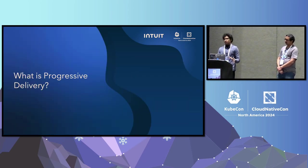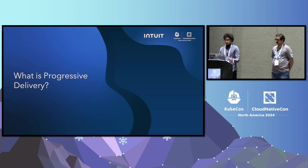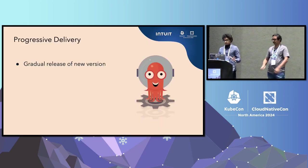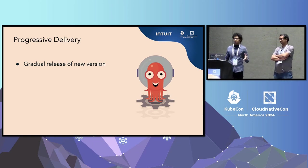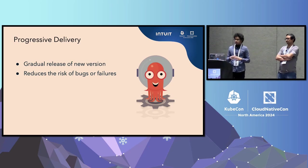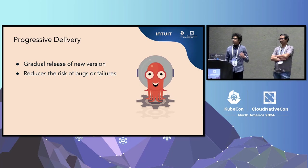So what really is progressive delivery? Progressive delivery is basically a gradual release of a new version. The reason we do it is because it reduces the risks of bugs and failures and reduces the impact of bad experiences for end users and customers.